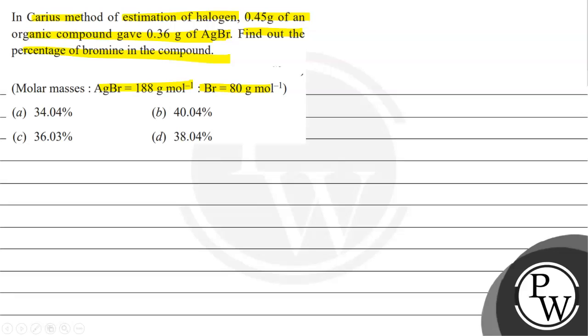Molar masses: AgBr is 188 gram per mole, Br is 80 gram per mole. Option A is 34.04 percent. Option B is 40.04 percent. Option C is 36.03 percent. Option D is 38.04 percent.